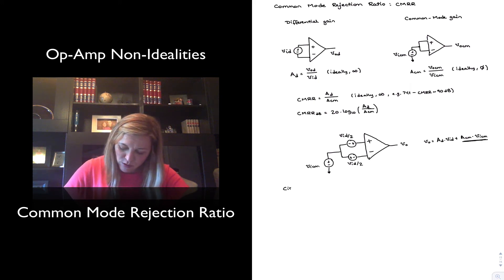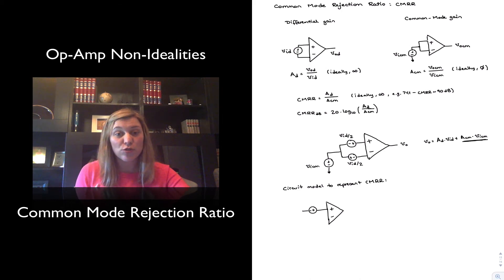And so our circuit model to represent the effects of CMRR will be essentially an ideal op-amp, so assuming an ideal CMRR, but then adding one of those offset voltage sources or noise voltage sources of value V common mode input divided by CMRR.